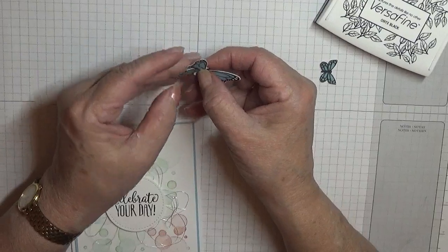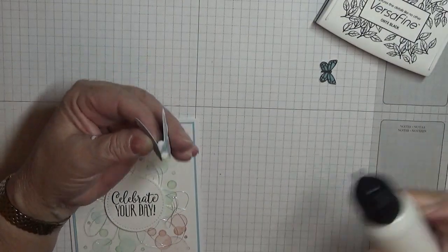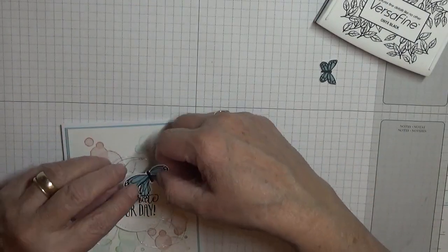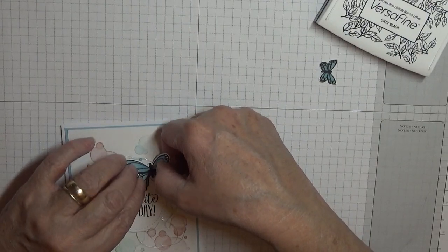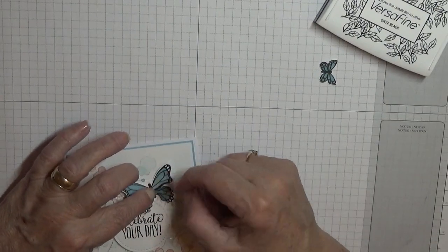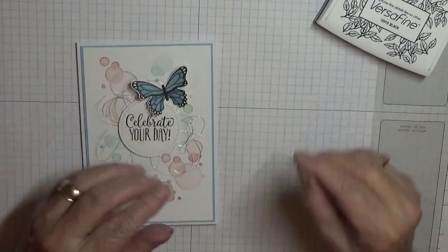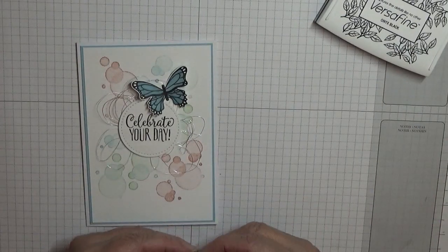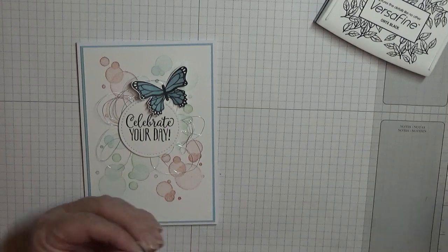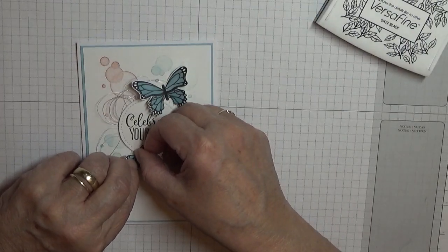And then I just folded the wings up and stuck them down with some glue. I'm going to put that one under there. And the little one I'm going to put down there.